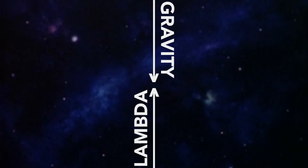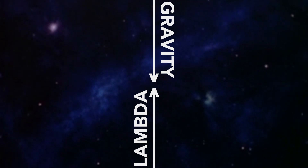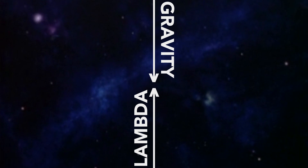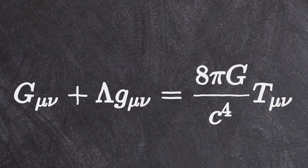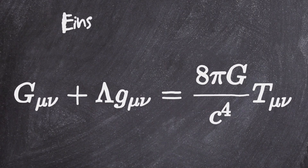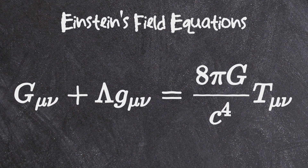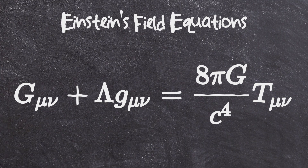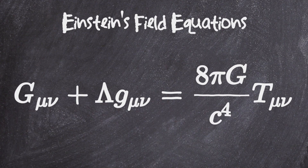Lambda was a sort of force that would oppose gravity and cause the universe to be in a state of balance — unstable balance, yeah, but balance nonetheless. So with his universe in complete stasis, he published what we know as Einstein's field equations. And everyone was happy and everything was right.